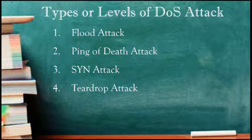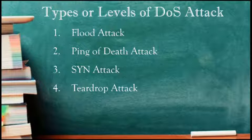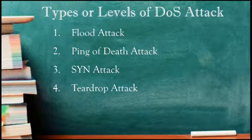The fourth type is the Teardrop Attack. The Teardrop Attack is an attack where fragmented packets are formed to overlap each other when the receiving host tries to reassemble them. IP's packet fragmentation algorithm is used to send corrupted packets to confuse the victim and may hang the system. This attack can crash various operating systems due to a bug in their TCP/IP fragmentation. Windows 3.1, Windows 95, and Windows NT, as well as versions of Linux, are vulnerable to this attack.